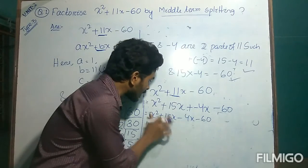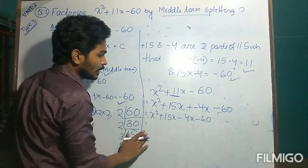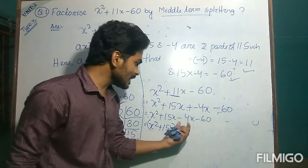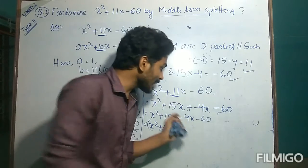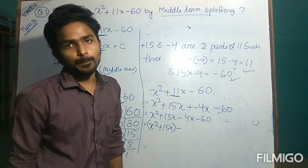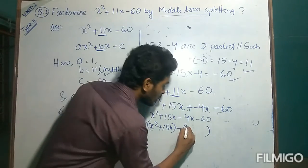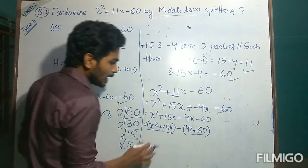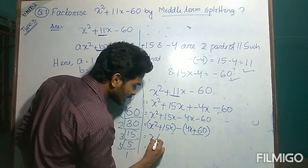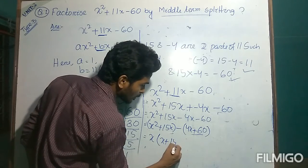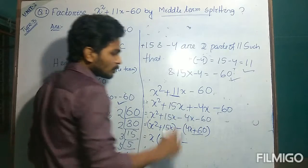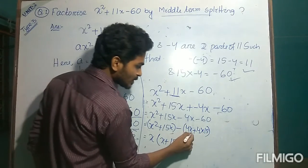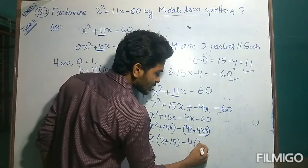Now we put brackets over the first two terms and brackets over the second two terms. Whenever you put a bracket over the second two terms, you can see there is a negative sign before the first number of the second part. That is why the negative sign is taken as common — whenever the negative sign is taken as common, all the signs inside the bracket will be changed to plus. From the first two terms, take x as common, giving x(x plus 15). From the second two terms, since 60 equals 4 into 15, take 4 as common, giving the rest as x plus 15.